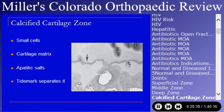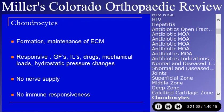The zone of calcified cartilage is marked by the tide mark, which is an H&E staining phenomenon. It has a cartilage matrix but with apatite salts within it; the cells tend to be small and it is felt to have shear properties. The chondrocyte is the functional cell of articular cartilage, serving to form and maintain the extracellular matrix. It is responsive to growth factors, interleukins, drugs, loads, and pressure changes.